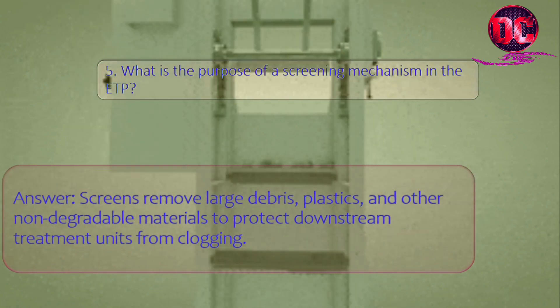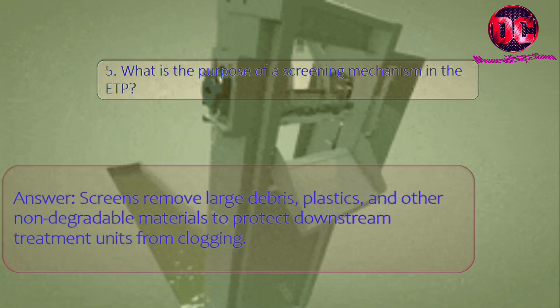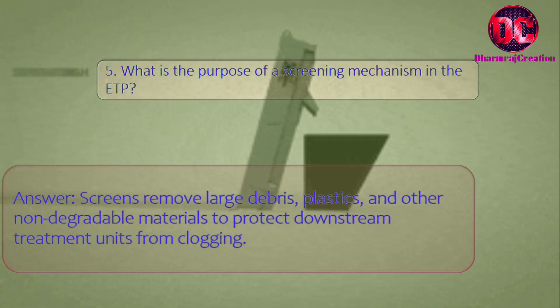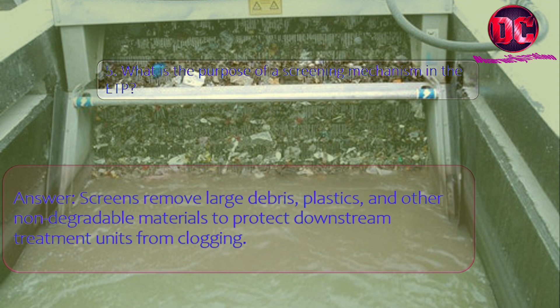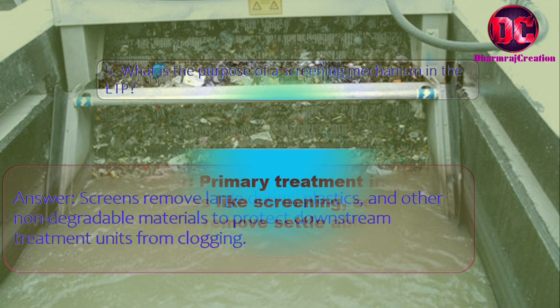5. What is the purpose of a screening mechanism in the ETP? Answer: Screens remove large debris, plastics, and other non-degradable materials to protect downstream treatment units from clogging.